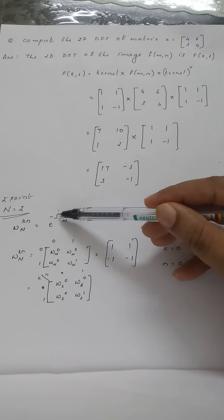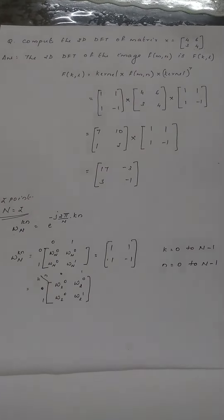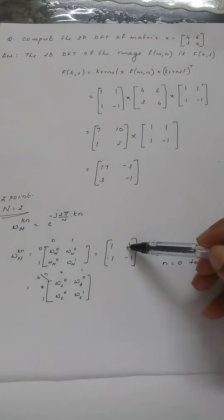Finally, e raised to minus jπ equals cos(π) minus j sin(π), which equals minus 1. So we get the kernel [1 1; 1 -1].